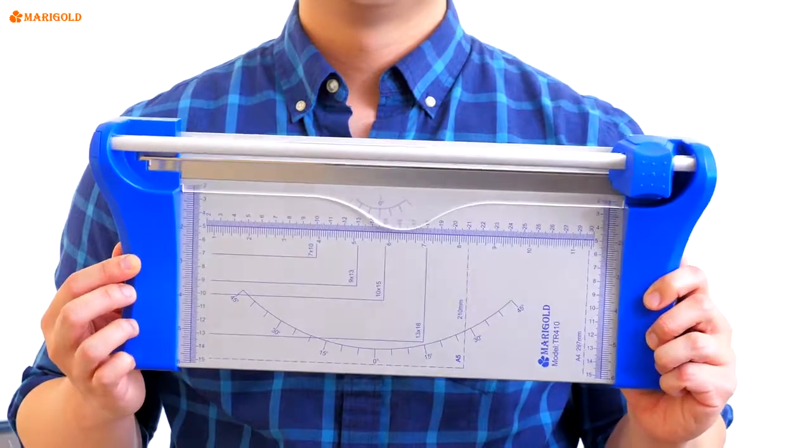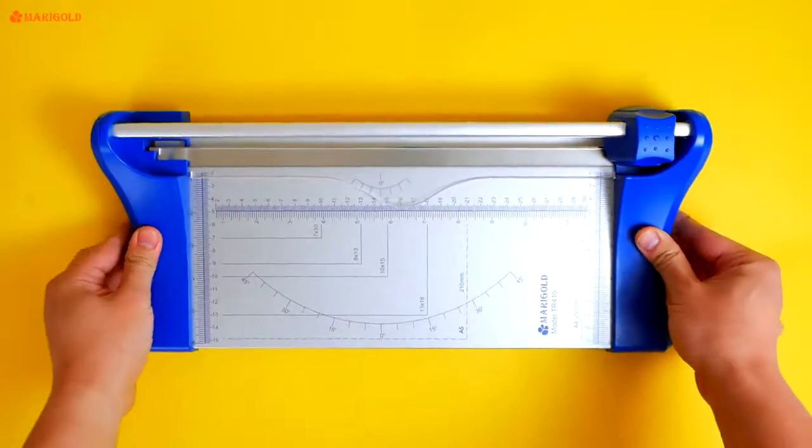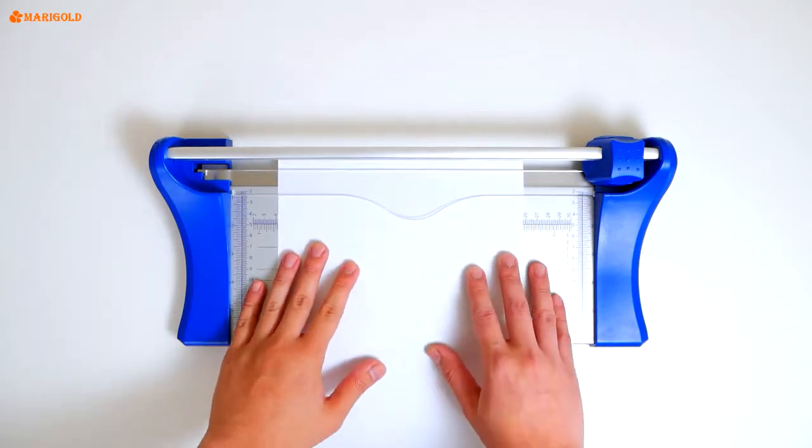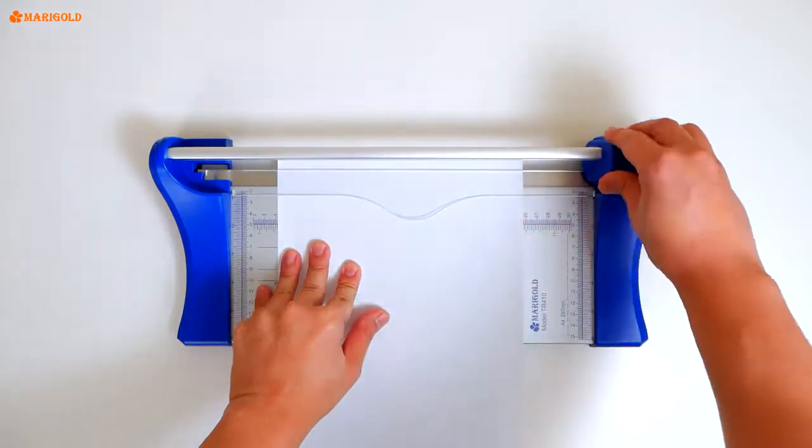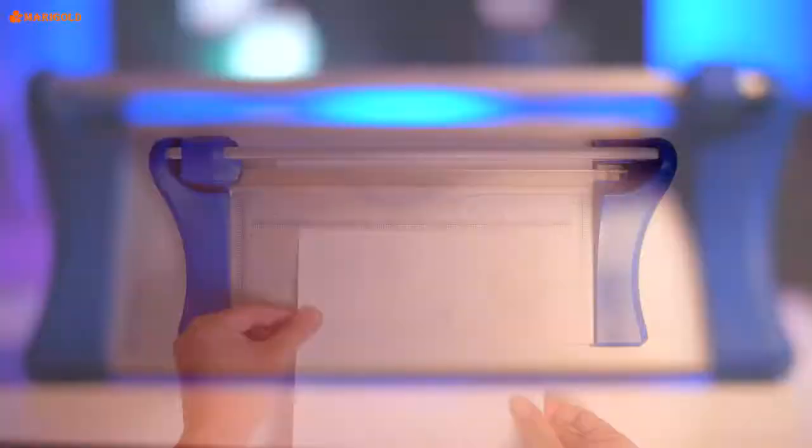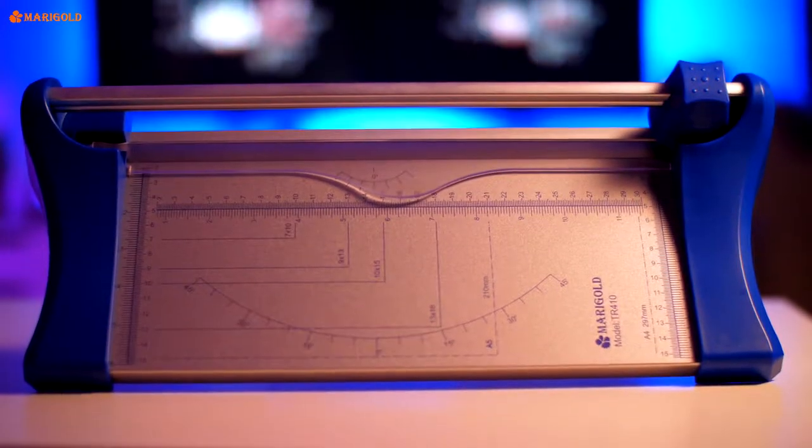Perfect for mixed-media projects, you can count on clean and precise cuts with its premium carbide blade. Cut through chipboard, cardstock, and up to 10 sheets of 20-pound paper. Slice through Christmas cards, big batches of stickers, flyers, and business cards with absolute ease. It's efficient, easy to use, and gives you a smooth and professional finish.